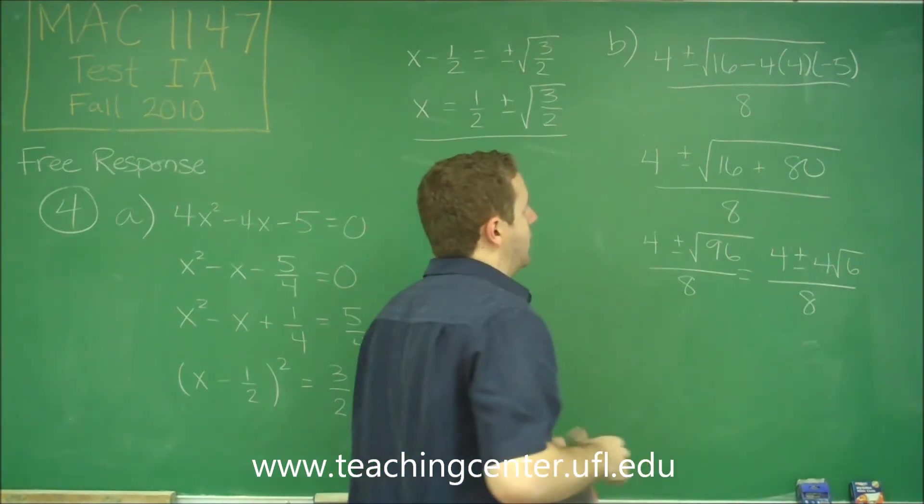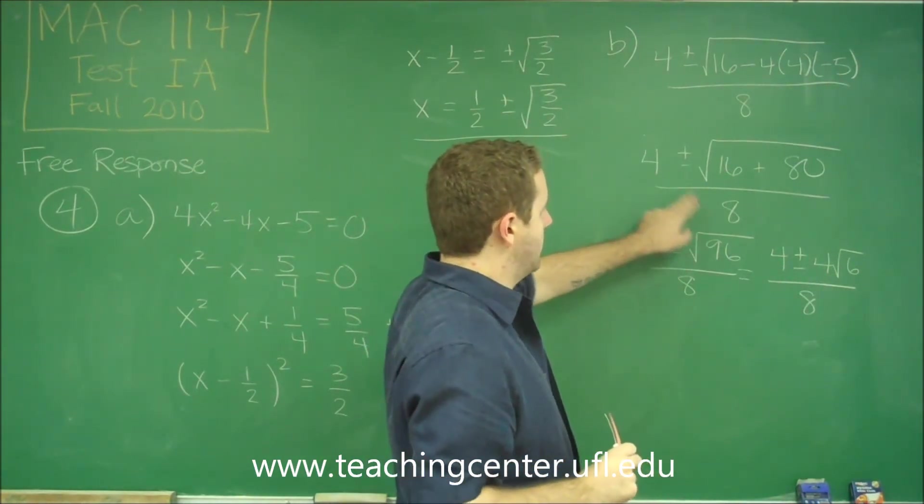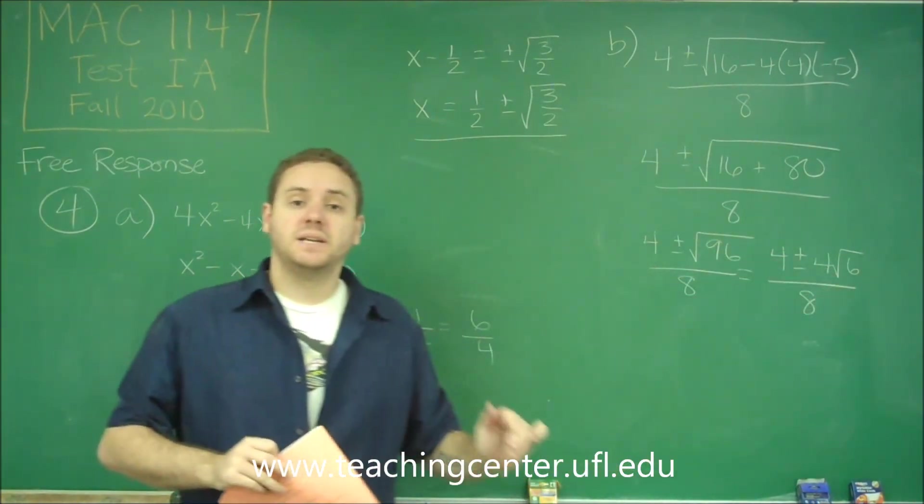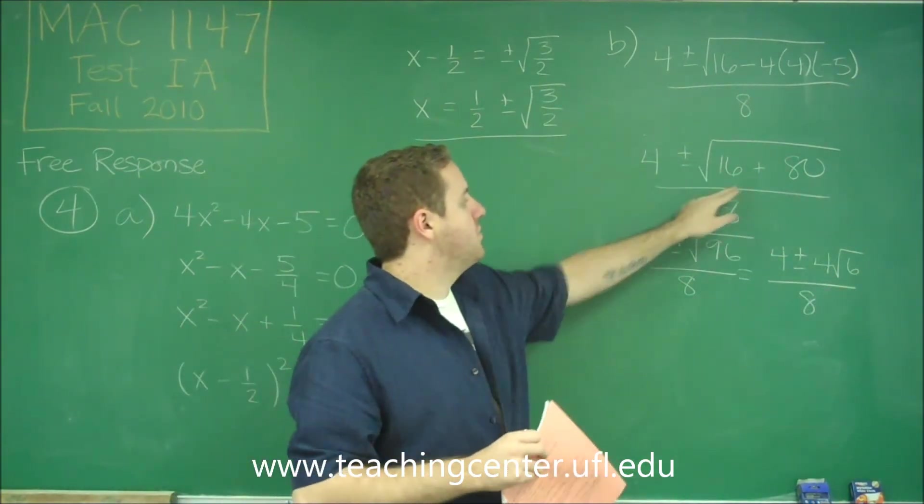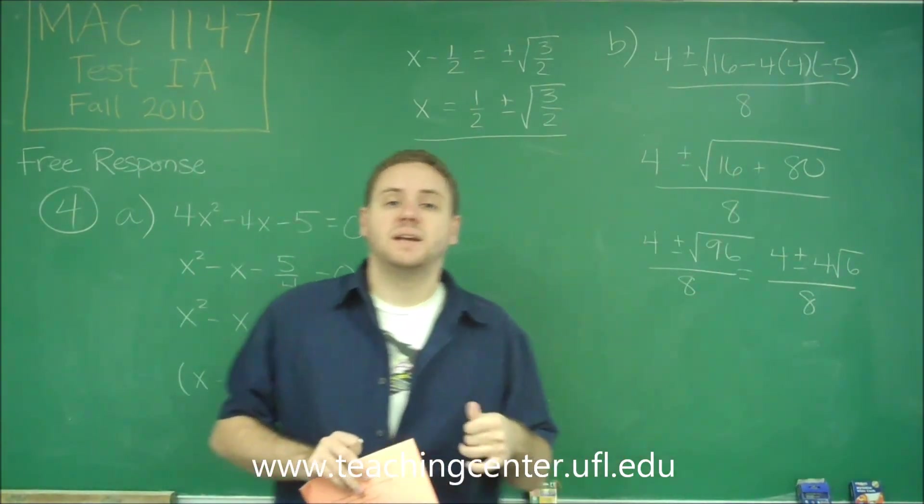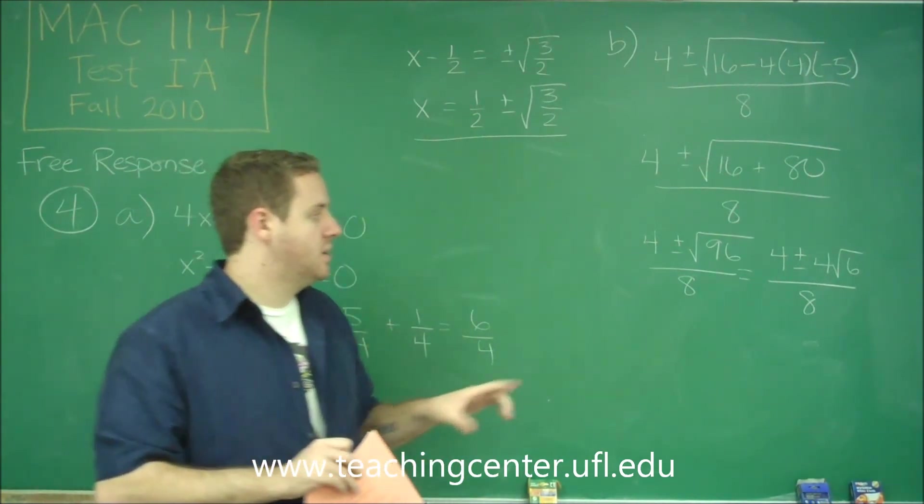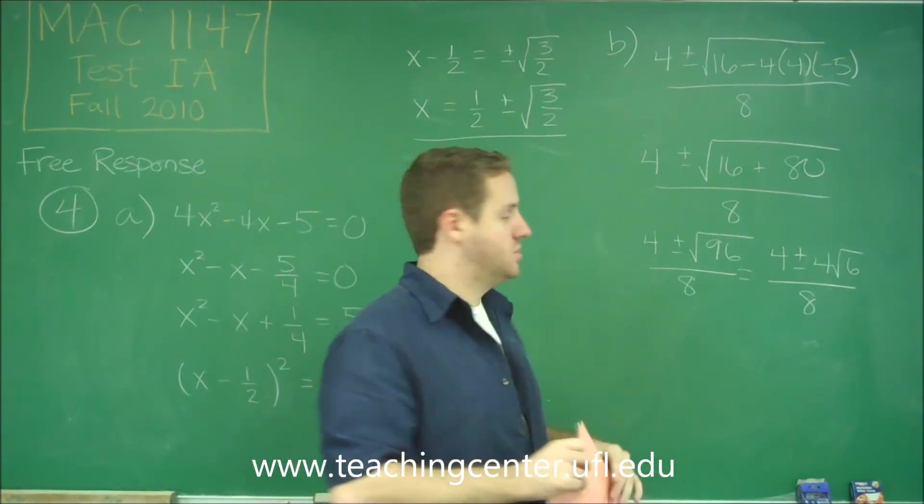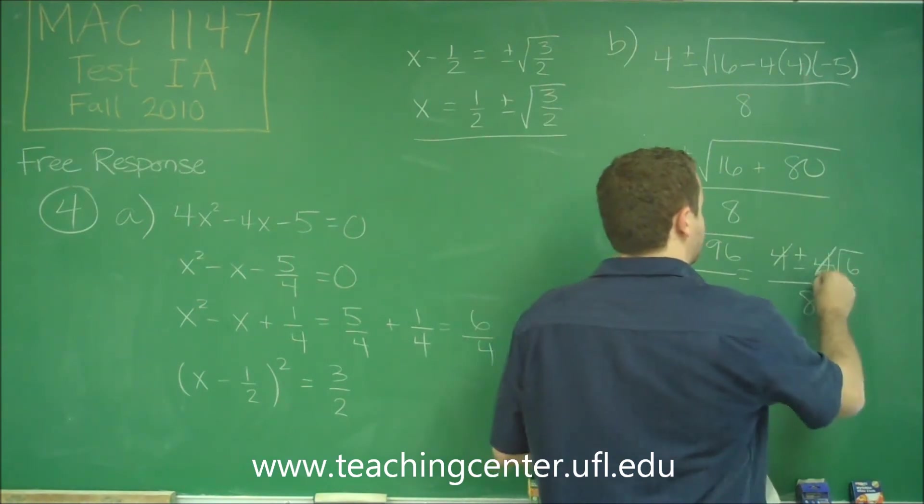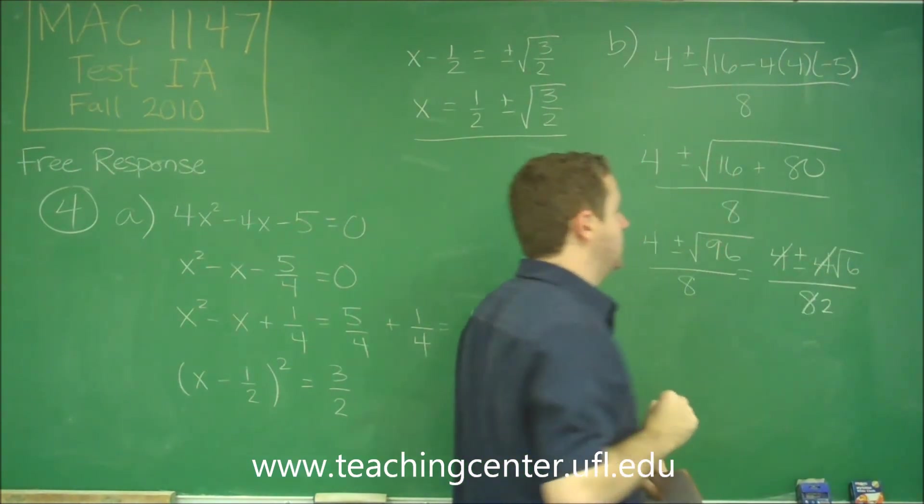A lot of you might have wanted to cancel this 4 and this 8 right there. You actually can't do that because you have 3 terms, and something would have to cancel out of all of them if you're going to cancel. Now, we have a 4 sitting here, so we can do that and turn this into a 2 in the bottom.